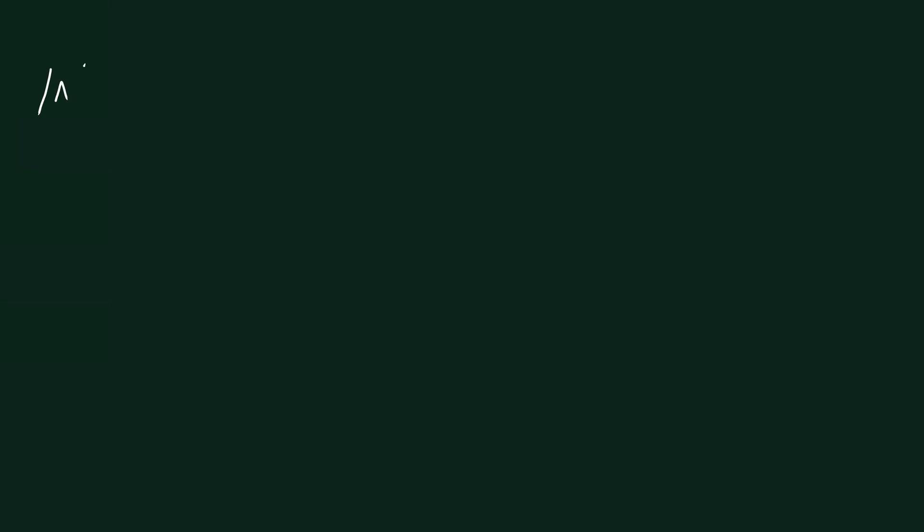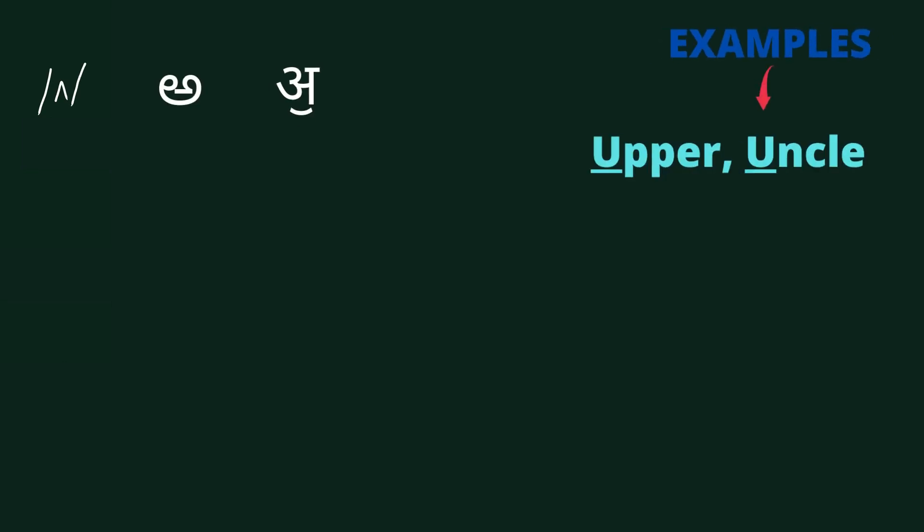We have the vowel sound /ʌ/. It is a mid-open back unrounded vowel. Examples are: upper, uncle.